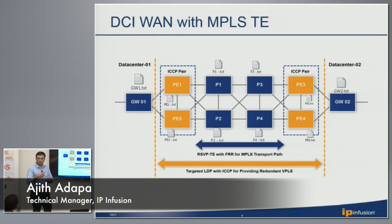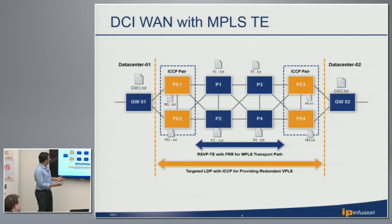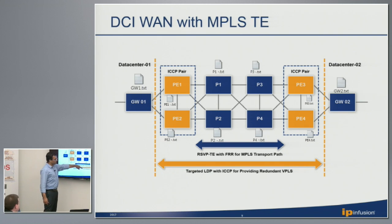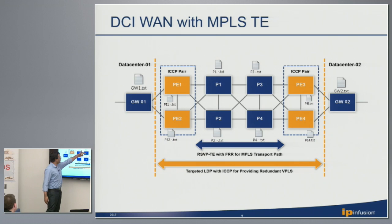ICCP is forming a redundancy group between PE1 and PE2. The moment PE1 goes off, the other PE becomes active for both VLANs and both VPLS instances, providing node-level redundancy at the edge. We are also using RSVP TE with FRR, providing both link-level protection and node-level protection. In case of a node-level failure at any PE node, we have a redundant path.